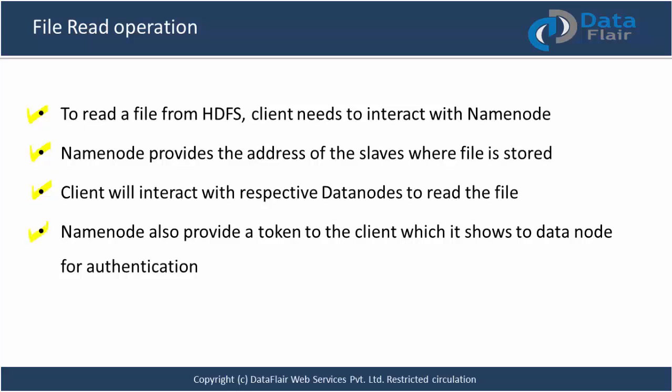You might ask: can anybody just go to a data node and read the data? No — the namenode also provides a token to the client, which it shows to the data node for authentication. It's like an ID card: whenever you enter your office premises you need to show your ID card. Similarly, a token ID card is provided by the namenode, the client shows it to the data node, and then the data node grants access.